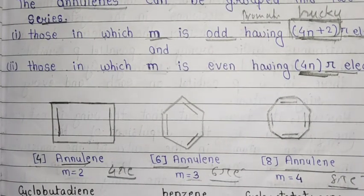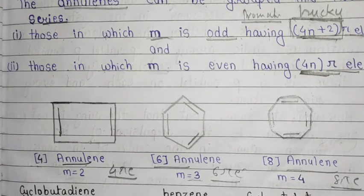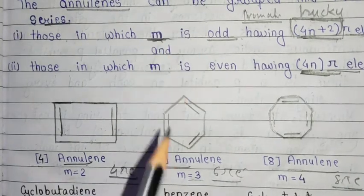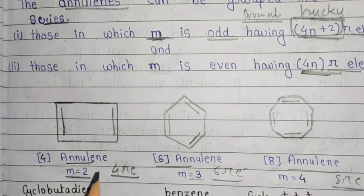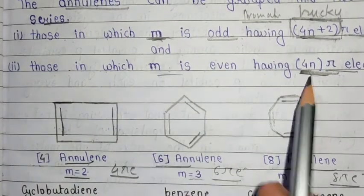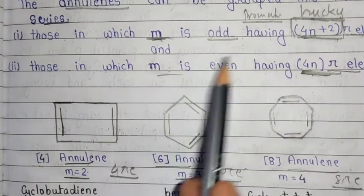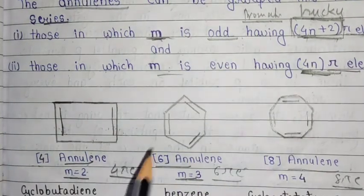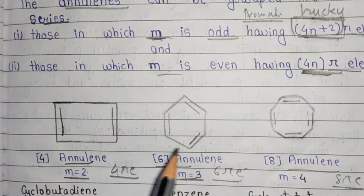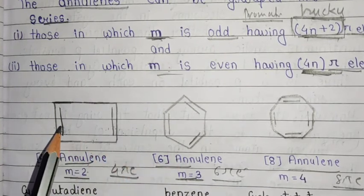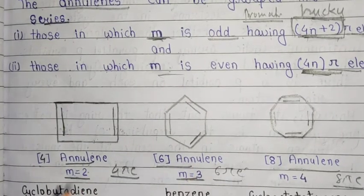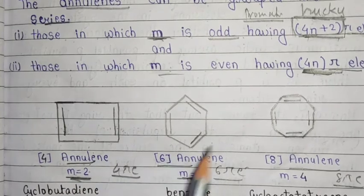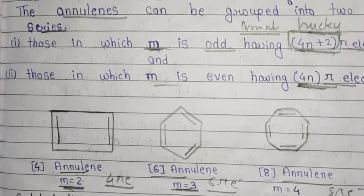So cyclooctatetraene is also a non-aromatic compound. M represents the number of bonds. If M is even — say there are 2 bonds — that's why it follows the 4n rule and is anti-aromatic. If M is odd, it follows Hückel's rule and is an aromatic compound. So this is a basic trick: if M equals 2 pi bonds it is anti-aromatic, and if M is an odd number it is an aromatic compound. I hope you understood.